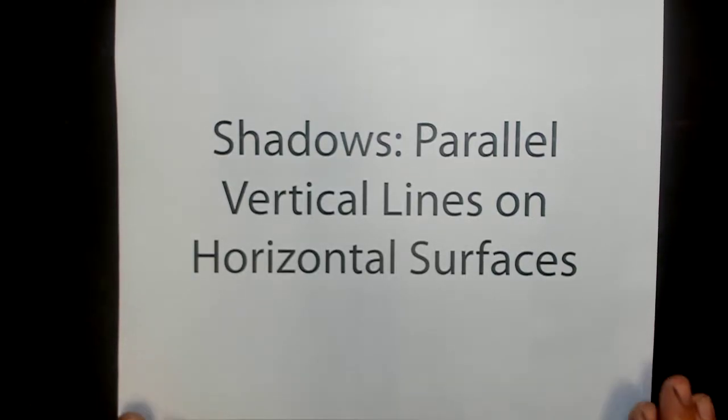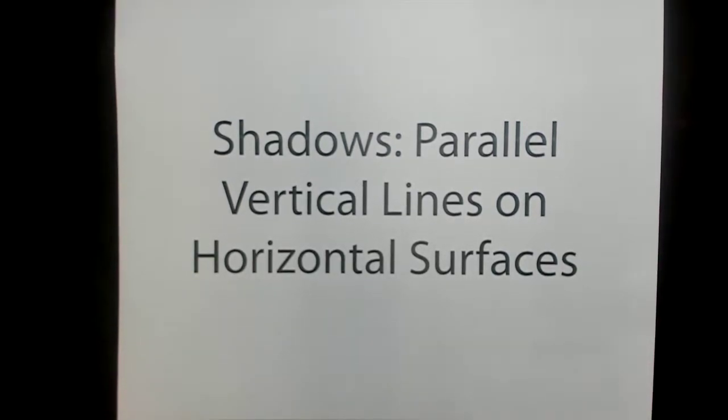We're going to take this one step at a time. Let's talk about the easy stuff and we'll get to harder stuff. So vertical lines casting shadows on horizontal surfaces. I'll try to have some organization to this. We'll talk about shadows on horizontal surfaces first: vertical lines, horizontal lines, angled lines, curved lines.